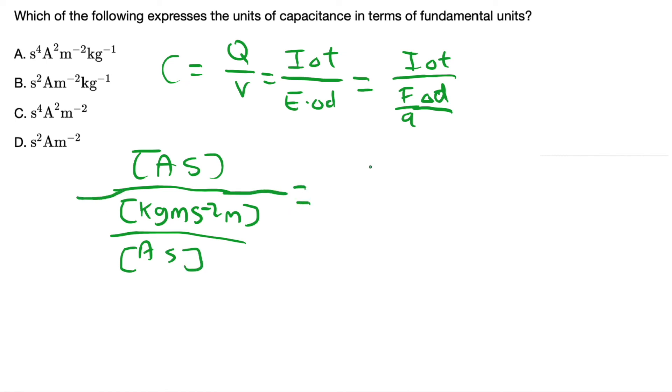So now we can simplify the equation. So this is equal to ampere times second over kilogram times meter times meter to the second power times second to the power of negative 3 times ampere to the power of negative 1. And you can simplify this equation again. So this is equal to ampere squared times second to the fourth power times meter to the power of negative 2 and kilogram to the power of negative 1. So the answer will be A.